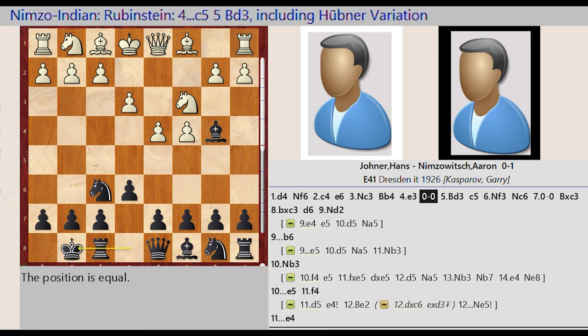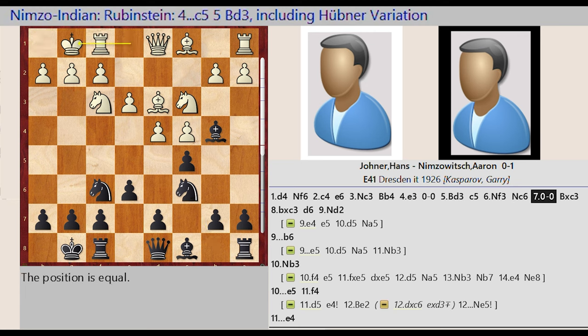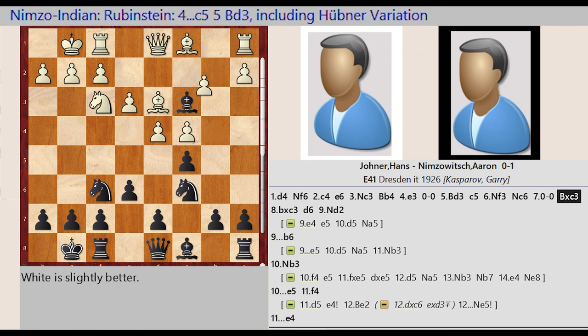Castling kingside, Bd3 c5, Nf3 Nc6, castling kingside, Bb4 takes c3, b takes c3, d6.